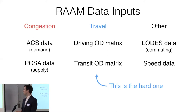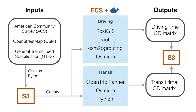Doing this at national scale requires new, cheaper infrastructure than what currently exists. We made our own pipeline using Docker, S3, and AWS. It ingests OpenStreetMap data, ACS data, and GTFS data, runs calculations on the cloud via Docker containers, and outputs OD matrices. One county is one unit of work, so you can submit one job for every single county in the United States and generate a national OD matrix in under two hours.